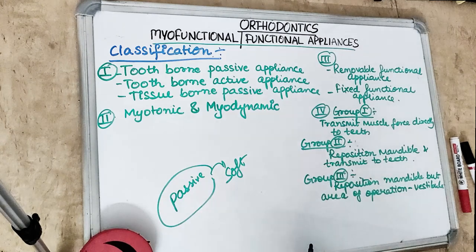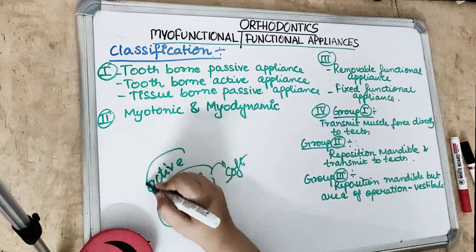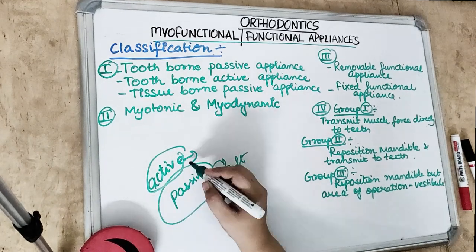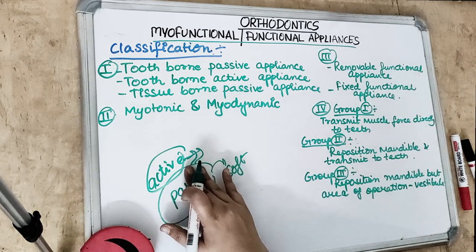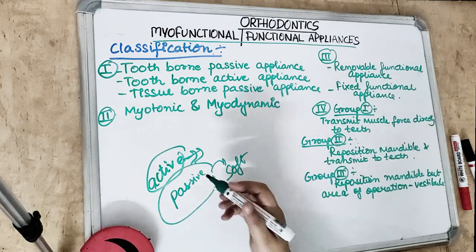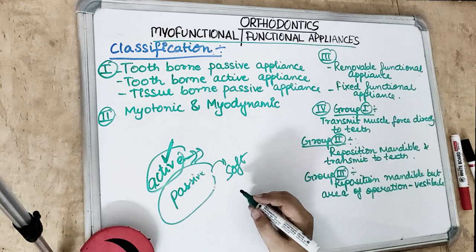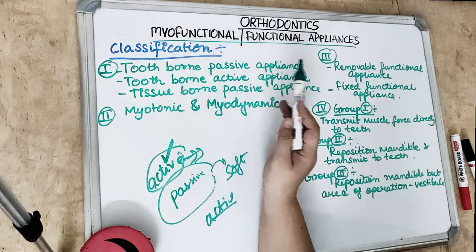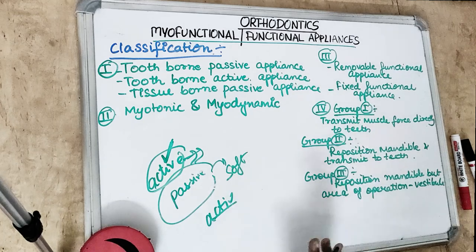Tooth-bone active appliances include appliances that do have an active component — either expansion screws or springs. This active component works on intrinsic force for transverse or anteroposterior changes. Examples of tooth-bone passive appliances are the activator, bionator, and Herbst appliance. Modifications of these appliances — such as modifications of the activator or bionator — are the tooth-bone active appliances.